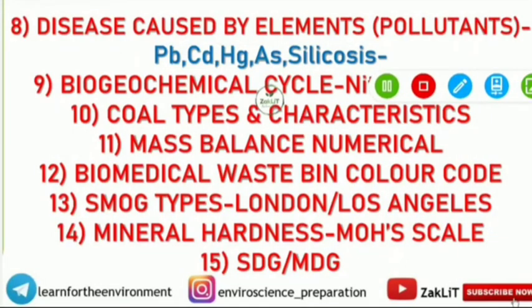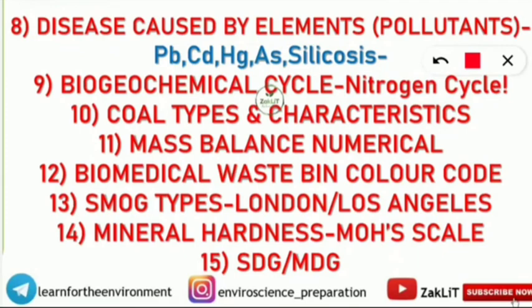Number eight is diseases caused by elements or pollutants — in air, water, or soil. For example, lead, cadmium, mercury, arsenic, silicosis. Questions come in the form of: which disease is Minamata disease? What is caused by mercury pollution? Itai-itai disease. These are very frequently asked questions and you should know them well.